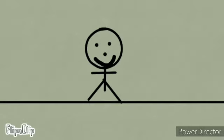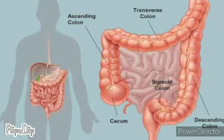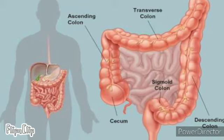Now we can start with the first part. First is the cecum, where the appendix is located below it. Then is the ascending colon, followed by the transverse colon, and the descending colon goes down and connects to the sigmoid colon.